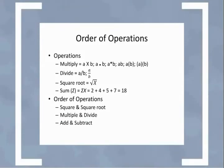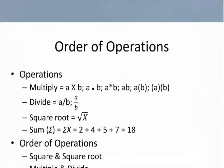Now let's take a moment to talk about order of operations. Now this is going back to high school days, but it's important to know because sometimes these can get mixed up. So first let's just talk about the various operations. We have multiply, divide, square root, and sum. When we're talking about sum, we're using the Greek letter sigma, or it looks like a big E, and that just simply means to sum. So in this bottom equation here, what we're saying is we're summing all the scores of X, variable X, score 2 + 4 + 5 + 7 = 18.